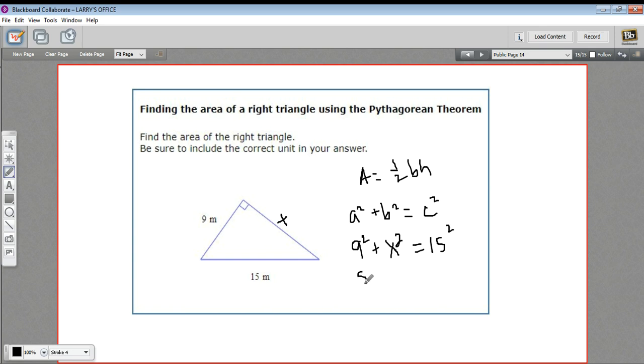All right, so nine squared is 81, and 15 squared is 225. So I want to get the x squared term alone.